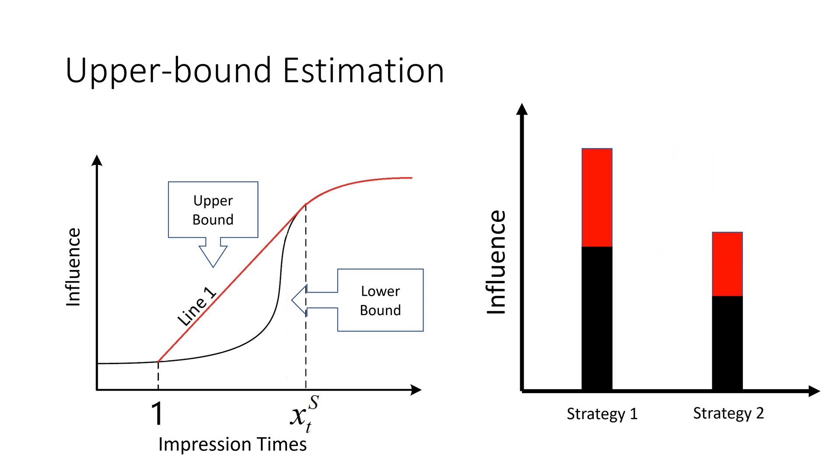Therefore, when we compare two strategies, if the upper bound of strategy 2 is lower than the lower bound of strategy 1, we know that 1 is better.